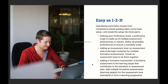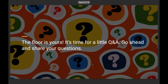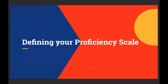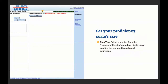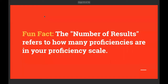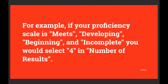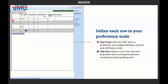Here are the general ideas to understand as you move forward on this option. Defining your proficiency scale: in JMC Teacher, head to Comments-Based Grading, Define Formative Assessments. Step one, select a course from the course drop-down list to begin setting up results. Step two, select a number from the number of results drop-down list to begin creating the standard-based result definitions. The number of results refers to how many proficiencies are in your proficiency scale. The 4-3-2-1 scale is becoming quite popular nationwide.